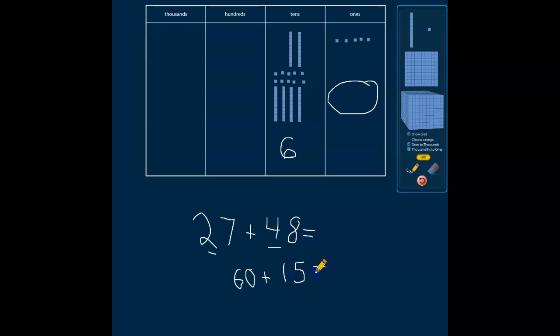However, when I started combining them, I found I got another 10. So I actually now have seven tens and five ones, which gives me the total sum of 75. Let's do another.